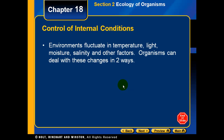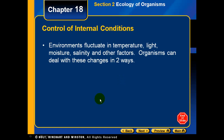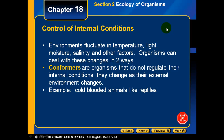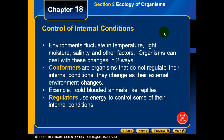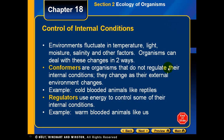Environments fluctuate in temperature, light, moisture, salinity, and other factors. Organisms can deal with these changes in two different ways. Conformers are organisms that do not regulate their internal conditions — they change as their external environment changes. This is the same as being cold-blooded. Cold-blooded animals, like reptiles, are the exact same temperature as their environment. Regulators, on the other hand, use energy to control their internal conditions. These are warm-blooded animals, like us — we maintain 98.6 degrees no matter how hot or cold it is outside.